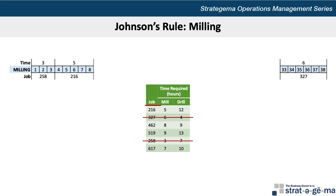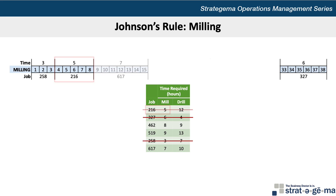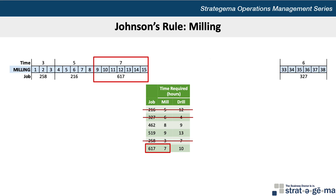The next shortest time is 5 hours of milling required by job 216, so we will schedule that after job 258. The next shortest time is 7 hours of milling required by job 617, so we will schedule that one after job 216. Note that if the shorter processing time would be in the drilling department, we would schedule that one before job 327 at the other end of the timeline.